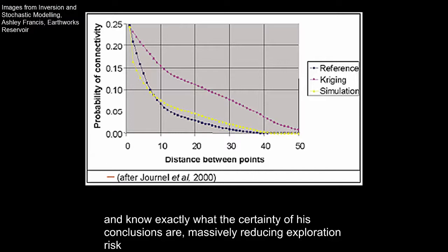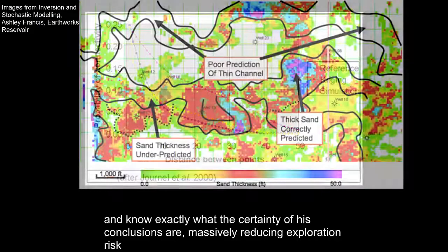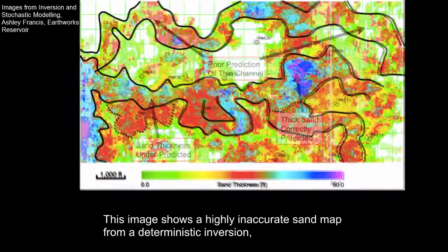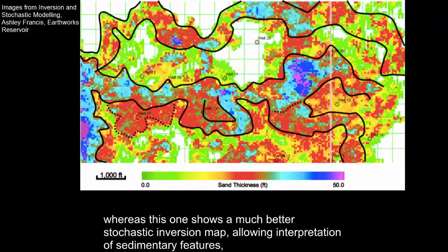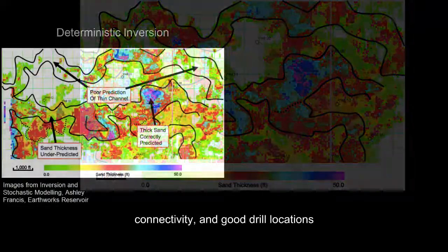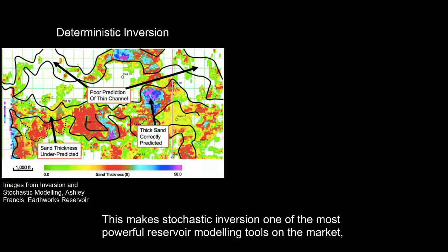This image shows a highly inaccurate sand map from a deterministic inversion, whereas this one shows a much better stochastic inversion map, allowing interpretation of sedimentary features, connectivity, and good drill locations. This makes stochastic inversion one of the most powerful reservoir modelling tools on the market.